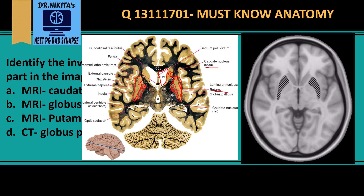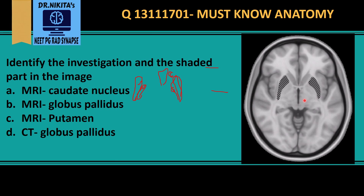Looking at this MRI, this part is the caudate nucleus, this medial part is the globus pallidus, and the shaded lateral part is the putamen. Therefore, the correct answer is option C — it's an MRI showing the putamen.